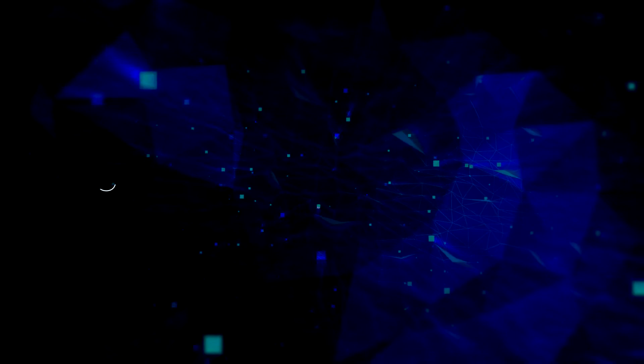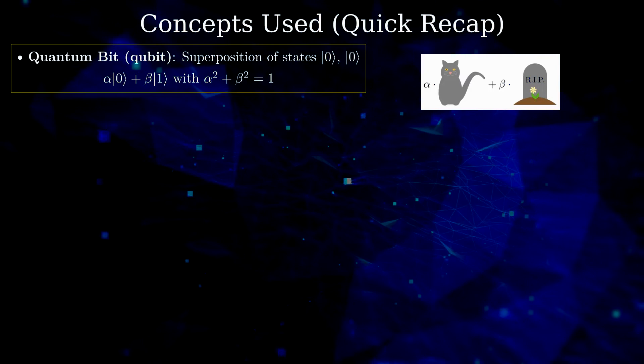We need the following concepts from quantum computing. A single qubit is the superposition of two distinguishable quantum states with amplitudes with squares sum to one.